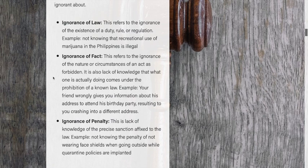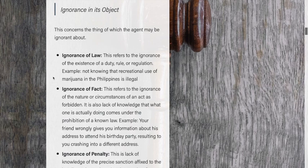The third type under ignorance in its object is ignorance of penalty: lack of knowledge of the precise sanction attached to a law — simply, not knowing the exact punishment for a certain violation. For example, not knowing the penalty for not wearing face shields when going outside while quarantine policies are being implemented. These three types fall under ignorance in its object.